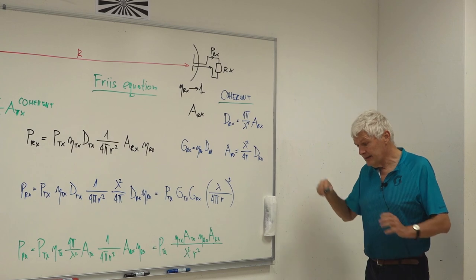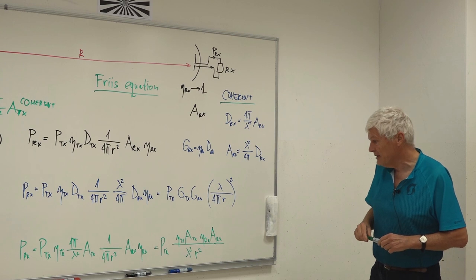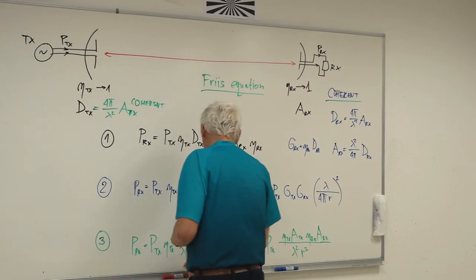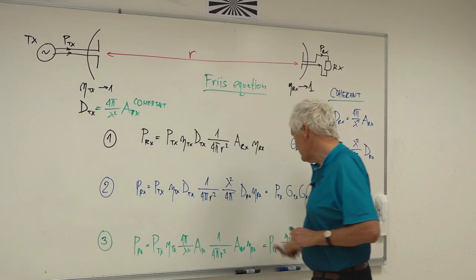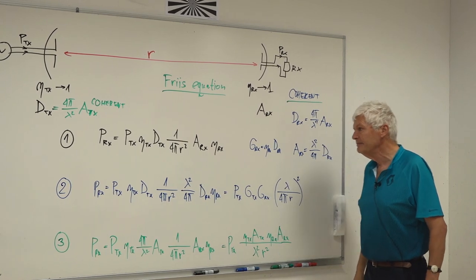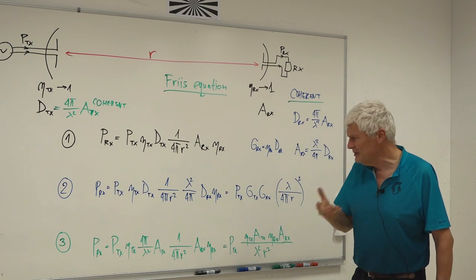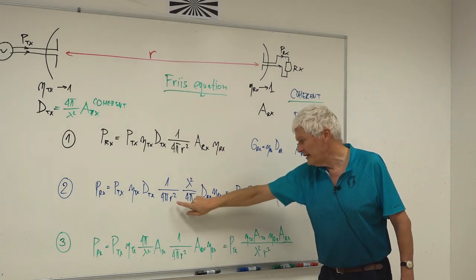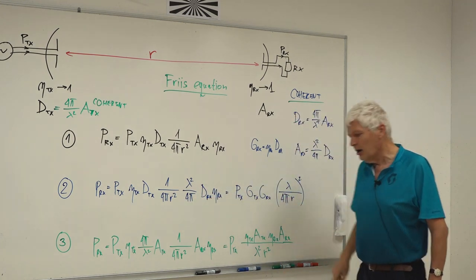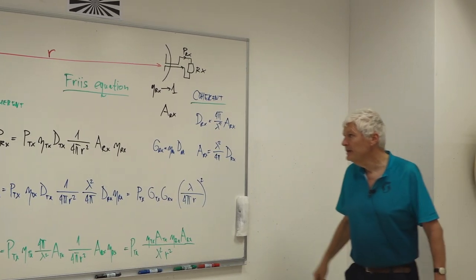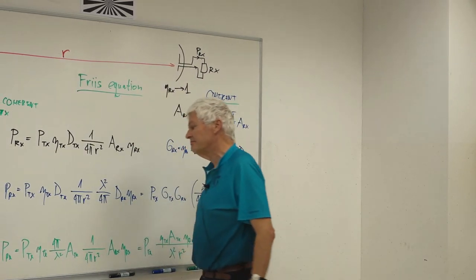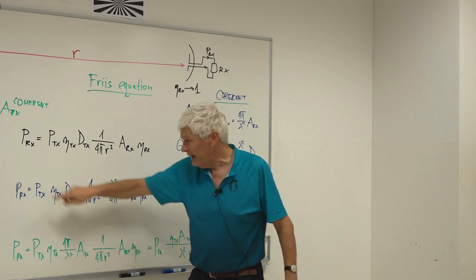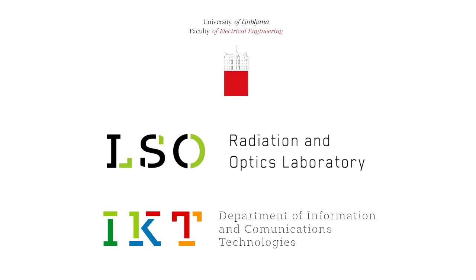That's all for this hour. Next hour we have to look at some subtleties about measuring antennas. A subtle problem we don't see directly from these equations: r is always in the denominator — r squared in the denominator in all three forms. What happens if we decrease the distance R? According to all three formulas, we could get more power in the receiver than we put into the transmitter, and we have to address this problem next hour.